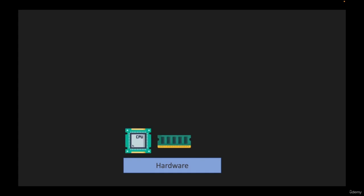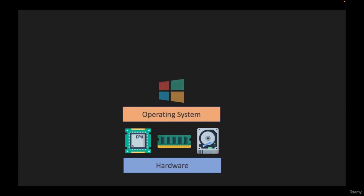Let's learn what a virtual machine is. A virtual machine is a machine that is virtual — but let me explain more seriously. Let's take a normal laptop. This laptop has hardware such as a CPU, RAM, disk, and so on. On top of the hardware, we install an operating system — let's say Windows — which controls how applications such as Microsoft Word or Notepad will use those hardware resources.